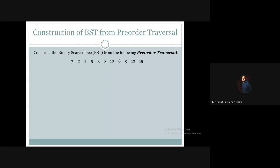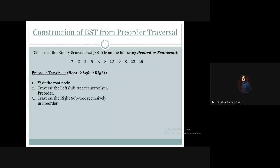First, let's recap what pre-order traversal is all about. In pre-order traversal, we first visit the root, then we traverse the left subtree of the root in pre-order manner, and lastly we traverse the right subtree of the root, also in the pre-order manner.